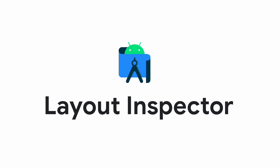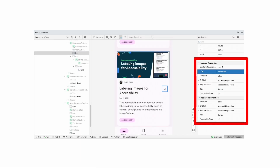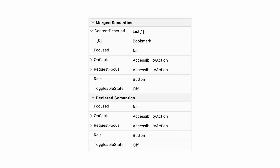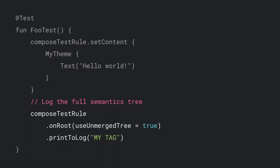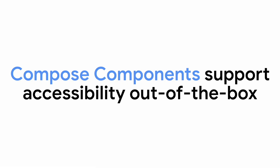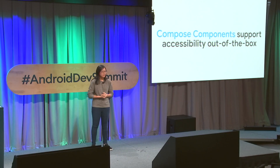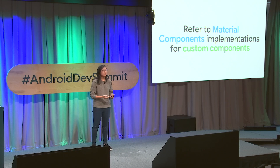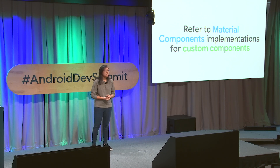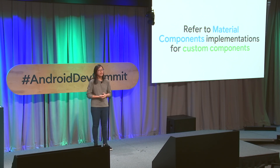If you ever want to take a closer look at the semantics tree for a composable, you can use the Layout Inspector in Android Studio — it will show you the specific semantics set on each node. You could also use the printToLog method in your Compose tests to log the full semantics tree. The important thing to remember is that if you're using components, they support accessibility out of the box. If you're building your own custom components, such as your own radio button or checkboxes, that's when you want to pay closer attention to accessibility support — a good way to do that is to check out the Material components implementation and the Compose Foundation library.